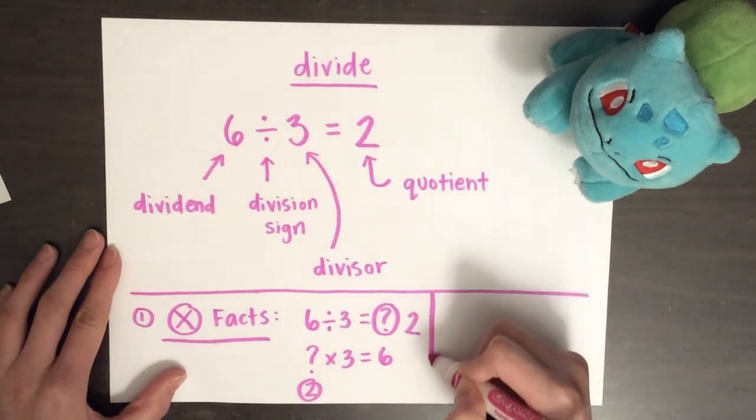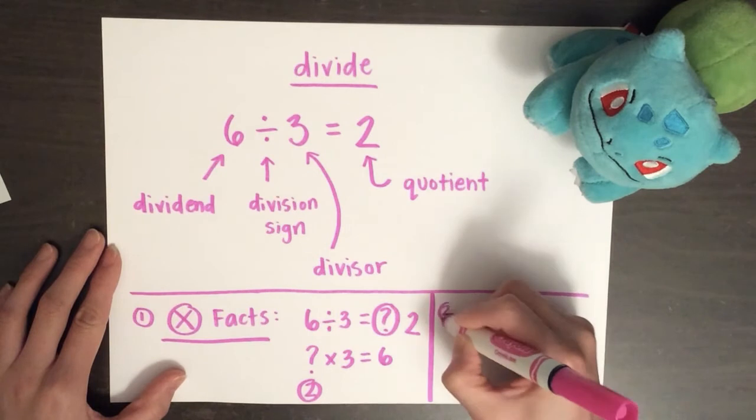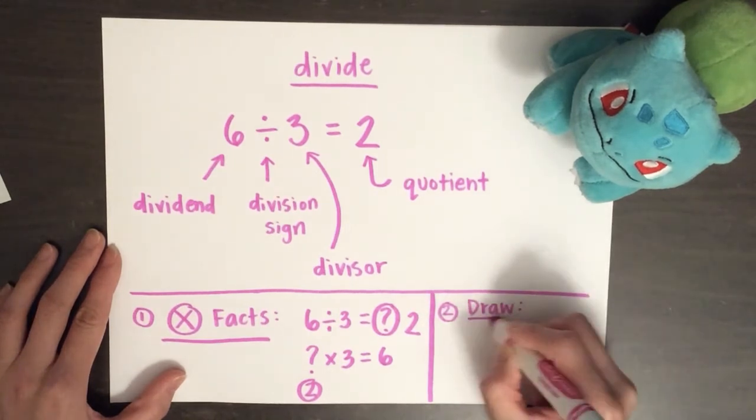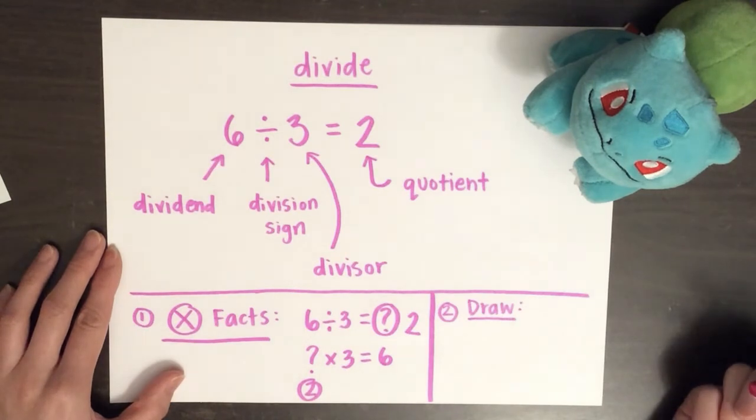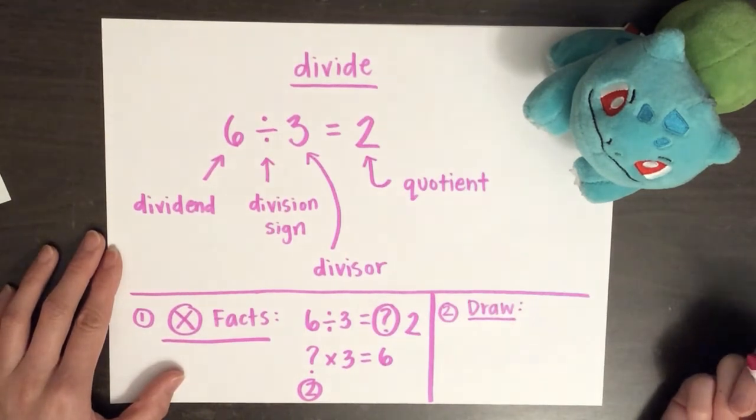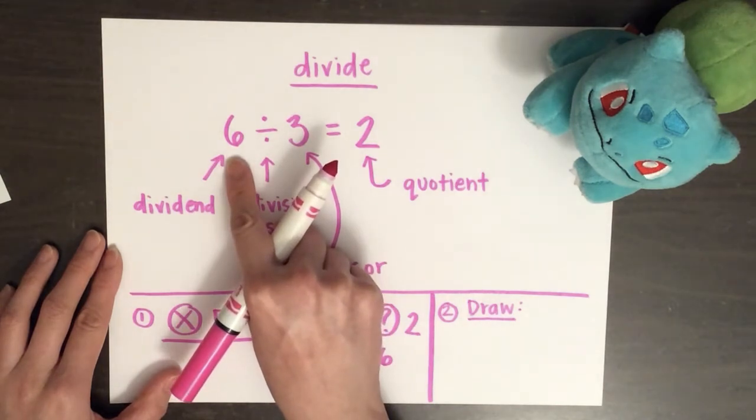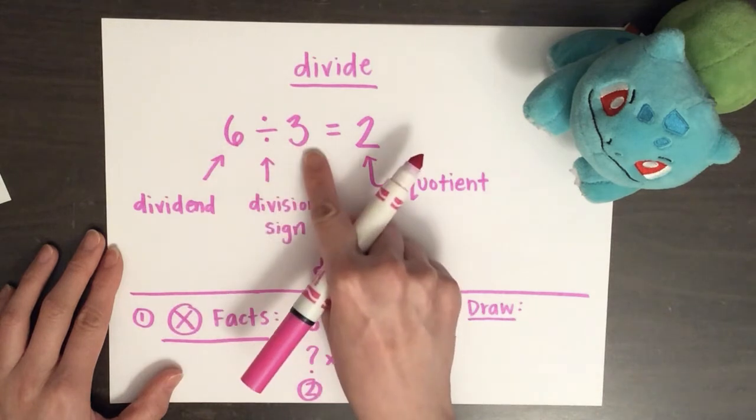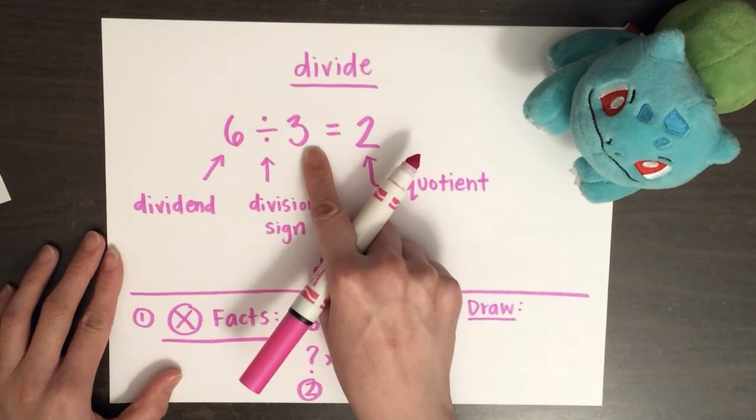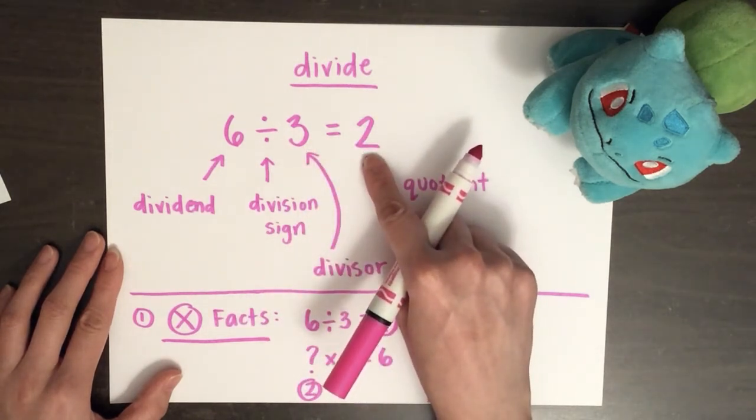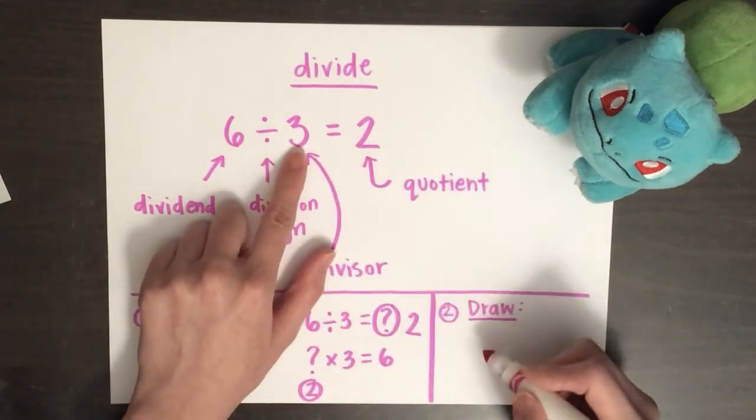Meaning each friend will receive two pieces of candy each. Here's another way to solve the problem. You can also draw a picture. Remember, the dividend tells us how many things we have and the divisor tells us how many groups we have. So in order to find out how many items each group has, let's draw how many groups first.